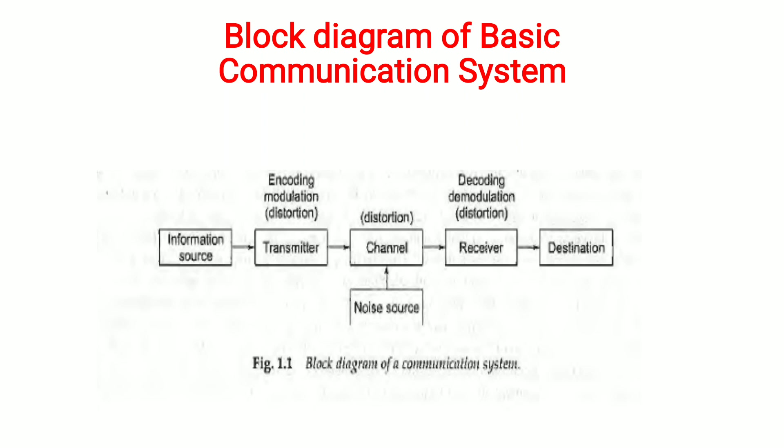The information source produces the required message that is to be transmitted, such as sound, picture, or speech. The next block is the transmitter. The objective of the transmitter block is to collect the incoming message signal from the source and encode or modulate that message signal to make it suitable for transmission and reception.